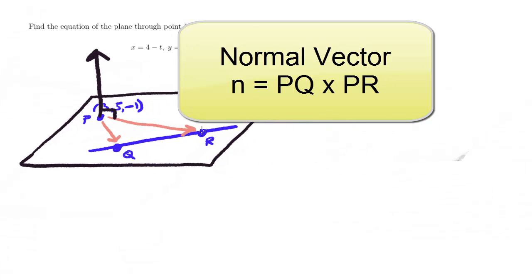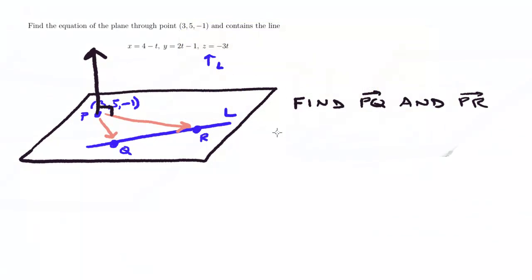So let's go ahead and find PQ and PR. First thing, I'm going to have to actually find the point for Q. And since I have parametric equations, I can just plug in t equals 0, and that will give me the point on the line when t is 0. So plugging in 0, you're going to get (4, -1, 0). Do the same thing to find R. We're now just going to plug in t equals 1, and that will give us the point (3, 1, -3).